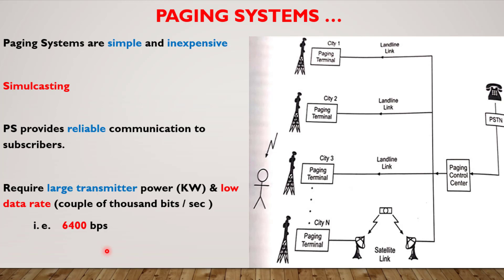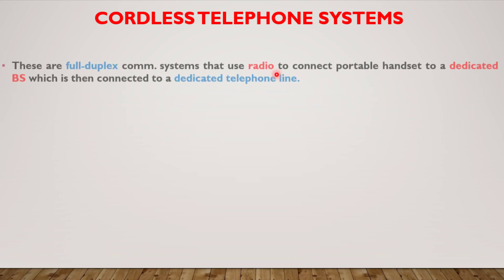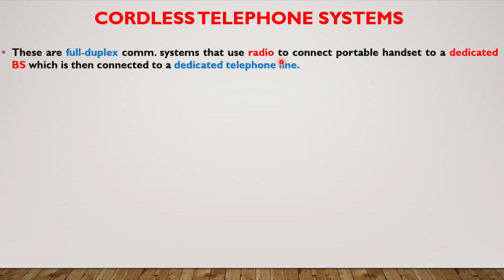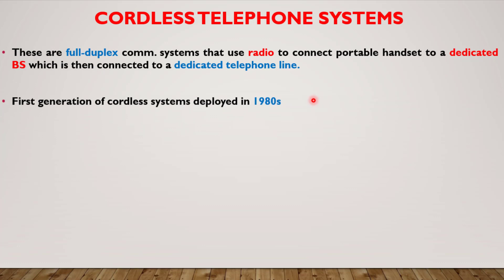Cordless telephone systems are full-duplex communication systems that use radio to connect a portable handset. Each portable handset — your cordless phone — is connected to a dedicated base station, which is connected to a dedicated telephone line with a specific telephone number. These portable handsets can work only under the coverage area of a dedicated base station. The first generation of cordless systems was deployed in the 1980s and provided mobility of only approximately tens of meters.